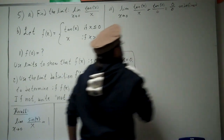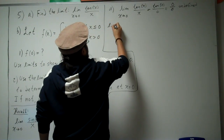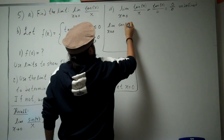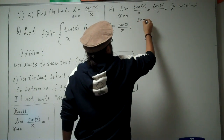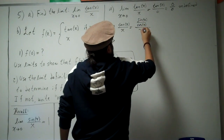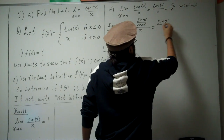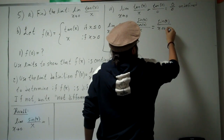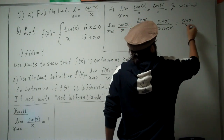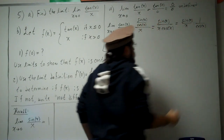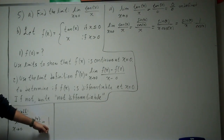Let's try to use some identities to simplify this. The limit as x approaches 0 of tangent of x over x can be rewritten using the identity that tangent of x equals sine of x over cosine of x, all divided by x. This simplifies to sine of x divided by x times 1 over cosine of x. I put it this way to recall that the limit as x approaches 0 of sine x divided by x is always 1.